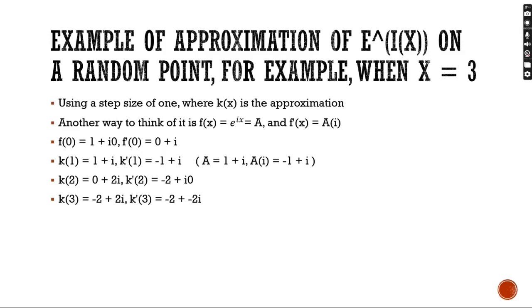Here is an example of approximating e to the ix on a random point. Using a step size of 1 where k of x is the approximation, another way to think of it is setting e to the ix equal to a, and where the derivative will be a of i. Using the same method, we find our following final approximation to be negative 2 plus 2i.